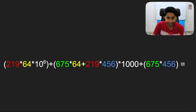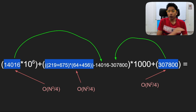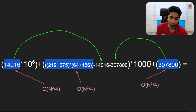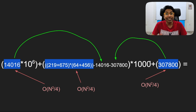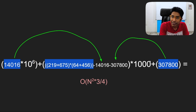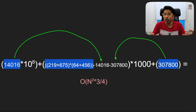Karatsuba went back to this algorithm and said: I can optimize this further. The middle term — the one multiplied by 1000 — can be improved. Instead of two multiplications there, you take the left and right terms and subtract them from the sum of the numbers. This reduces from four multiplications to just three. The benefit is recursive: you can apply Karatsuba to every inner multiplication, giving a time complexity of O(n^log₂3) which is roughly O(n^1.585).